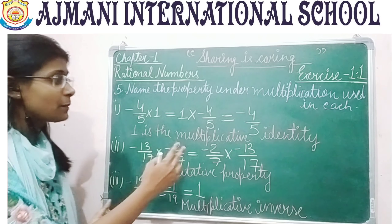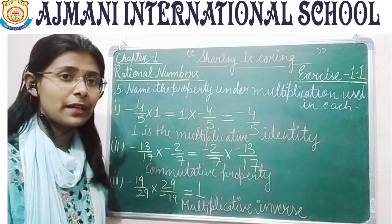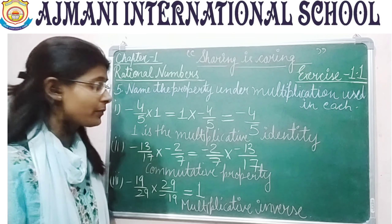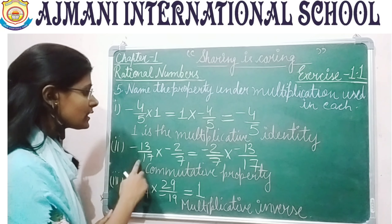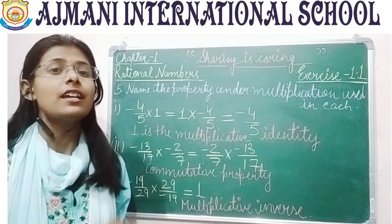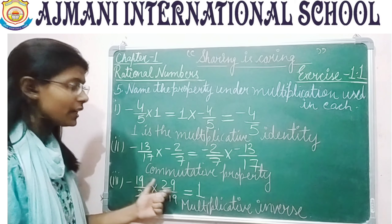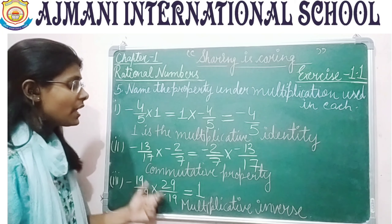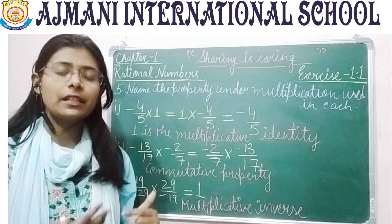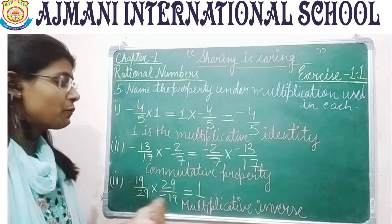If 1 is multiplied by any rational number or a rational number is multiplied by 1, the answer remains the rational number itself — that is the multiplicative identity. The second part: minus 13 by 17 multiplied by minus 2 by 7 equals minus 2 by 7 multiplied by minus 13 by 17. The rational numbers are the same but their positions are exchanged — this is commutative property of multiplication. Third: minus 19 by 29 multiplied by minus 29 by 19 equals 1, so the property is multiplicative inverse.